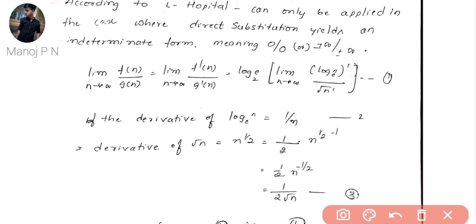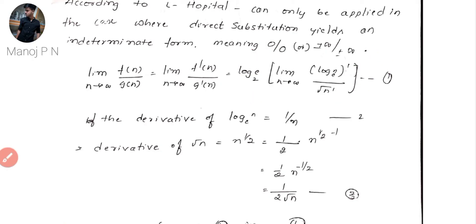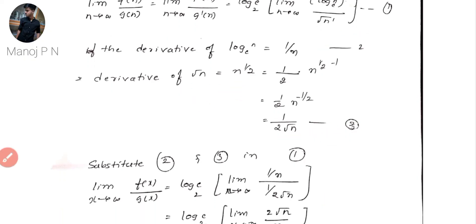L'Hospital's rule states: limit n→∞ of f(n)/g(n) equals limit n→∞ of f'(n)/g'(n). In indeterminate form, differentiate both f(n) and g(n) and the result gives the answer. The differentiation of log n is 1/n, and the differentiation of root n is 1/(2·root n).